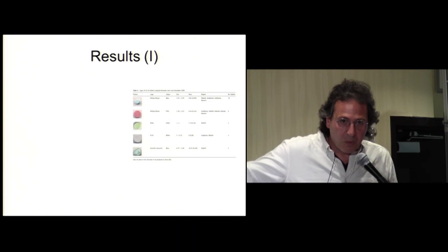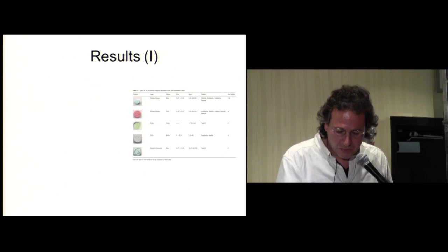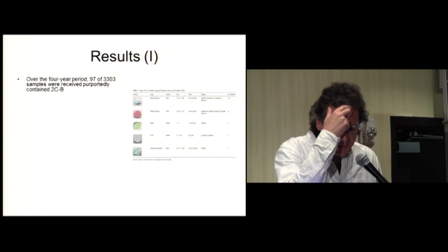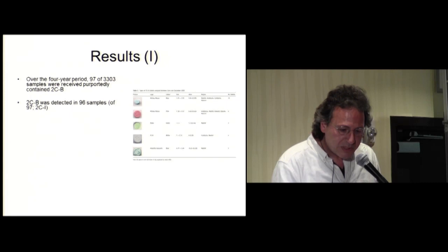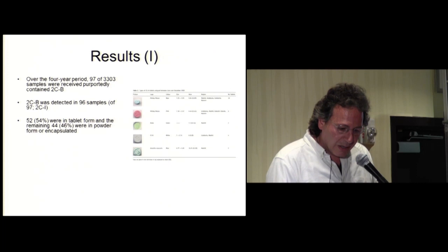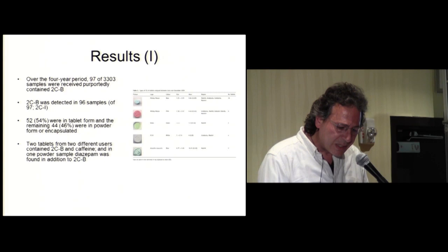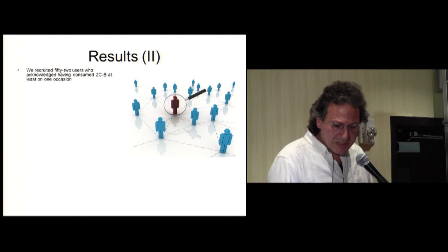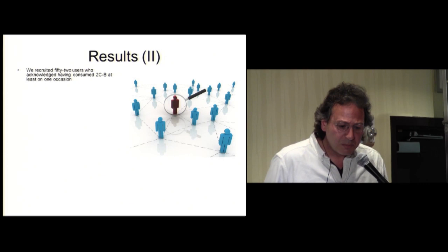This is one of the most popular pills of 2CB that we received in our laboratory to analyze. Over the four-year period, 97 of 3,333 samples received purportedly contained 2CB. 2CB was detected in 96 samples, the other one was 2C-I. 52 were in tablet form and the remaining 44 were in powder form or encapsulated. Two tablets from two different users contained 2CB and caffeine, and in one powder sample diazepam was found in addition to 2CB. In 2008, mean 2CB content was 50 milligrams and in 2009 it was almost 9.